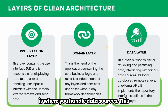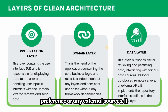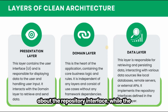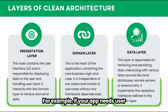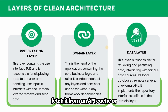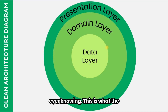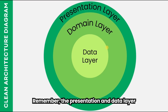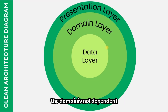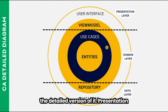The third layer is the data layer. This is where you handle data sources — APIs, local database, shared preferences, or any external sources. It has repositories which act as a middleman between the domain layer and the actual data sources. The domain layer only knows about the repository interface, while the data layer provides the implementation. For example, if your app needs user data, the repository decides whether to fetch it from an API, cache, or local database — without the domain or UI ever knowing. Remember: the presentation and data layers depend on the domain layer, but the domain layer is not dependent on any other layer.